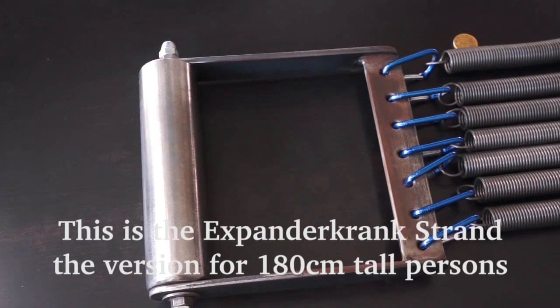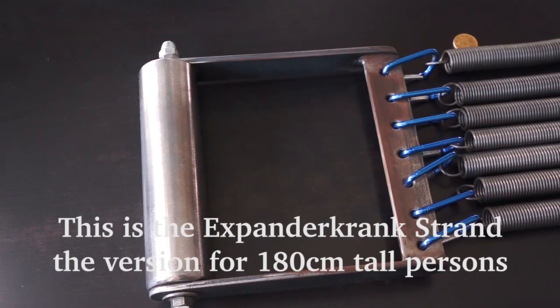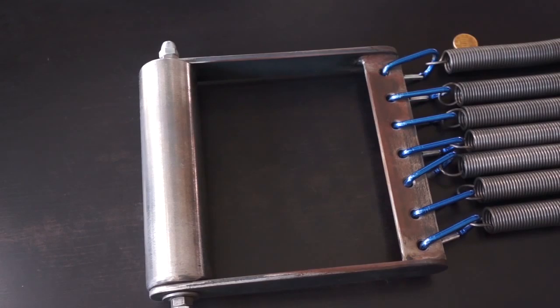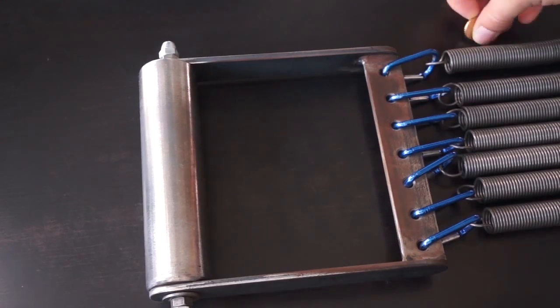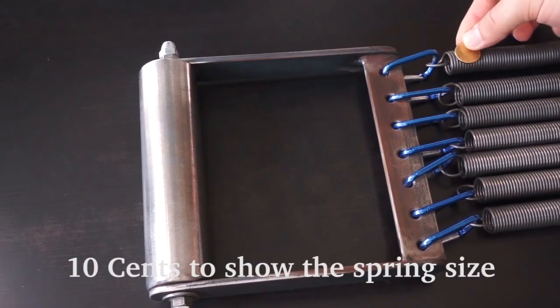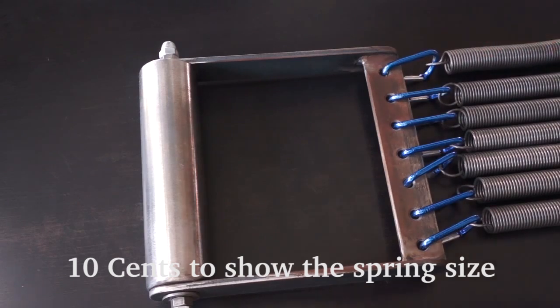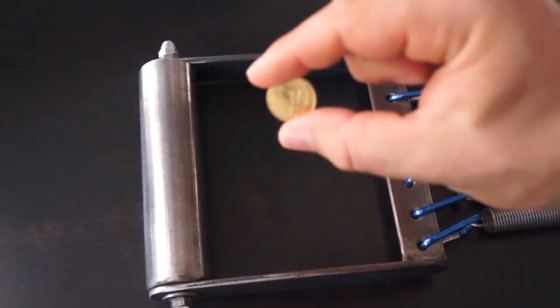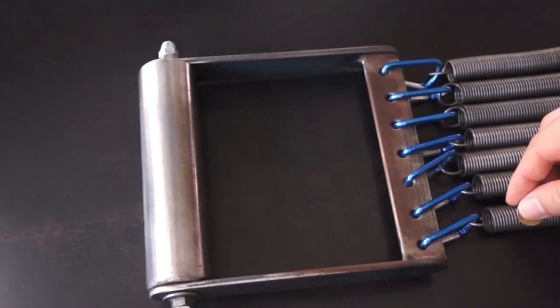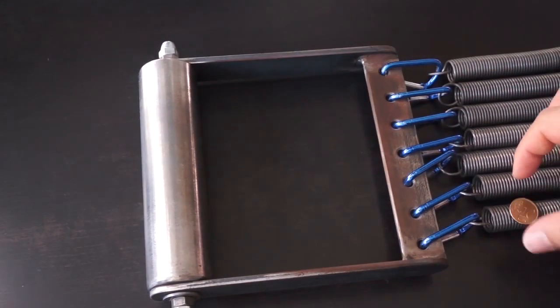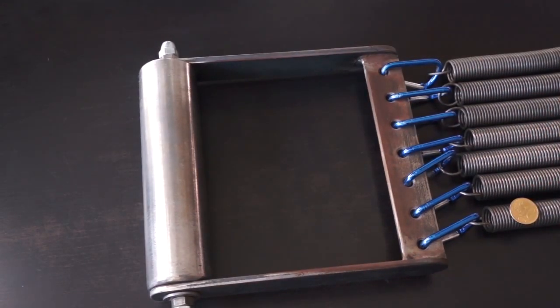Das hier ist der Expander Krank Strand, das Modell was auf 1,80m abgestimmt ist. Zum Vergleich wie groß die Federn sind, hier ein 10-Cent-Stück. Das 10-Cent-Stück ist genauso groß wie die Federn.